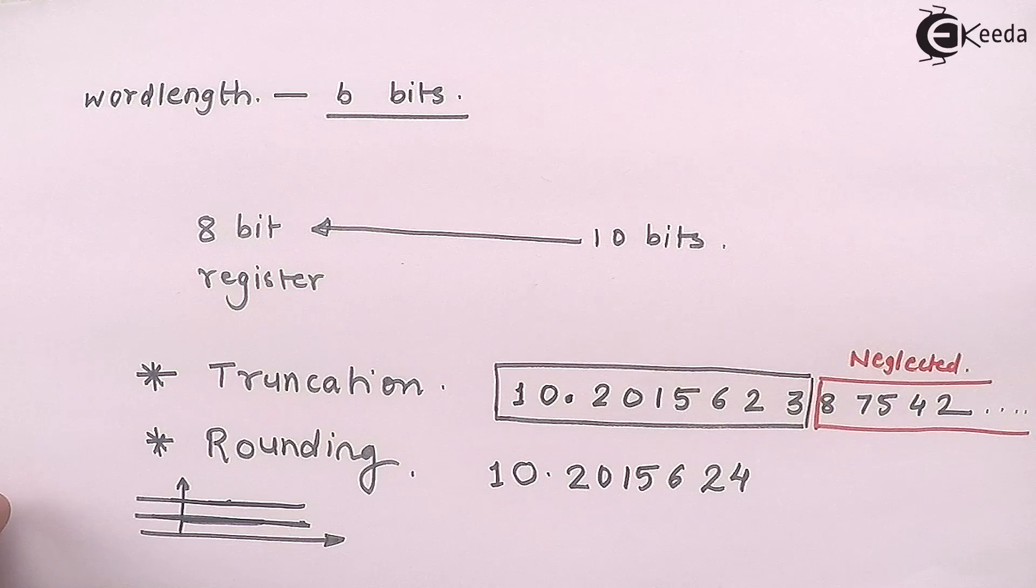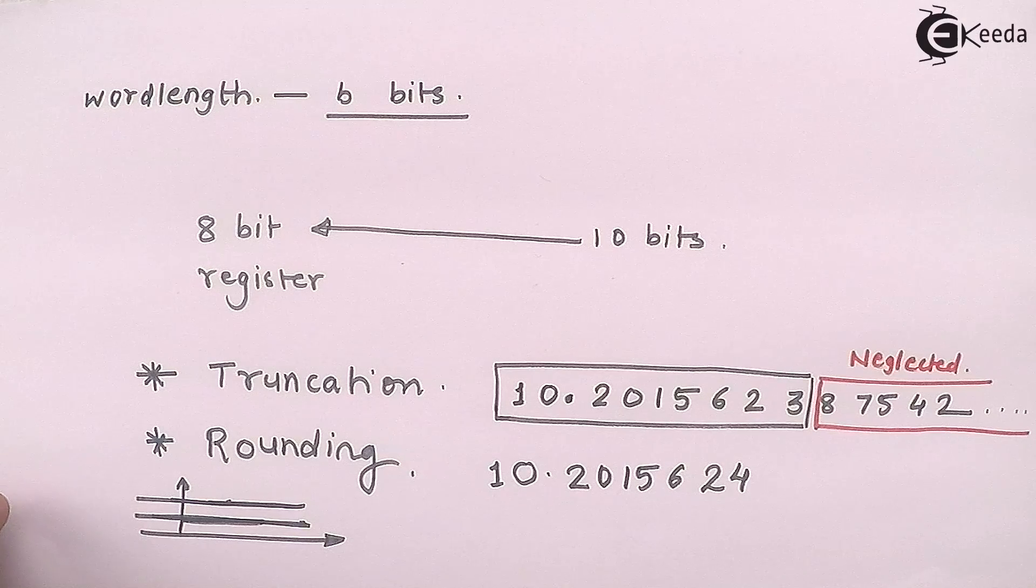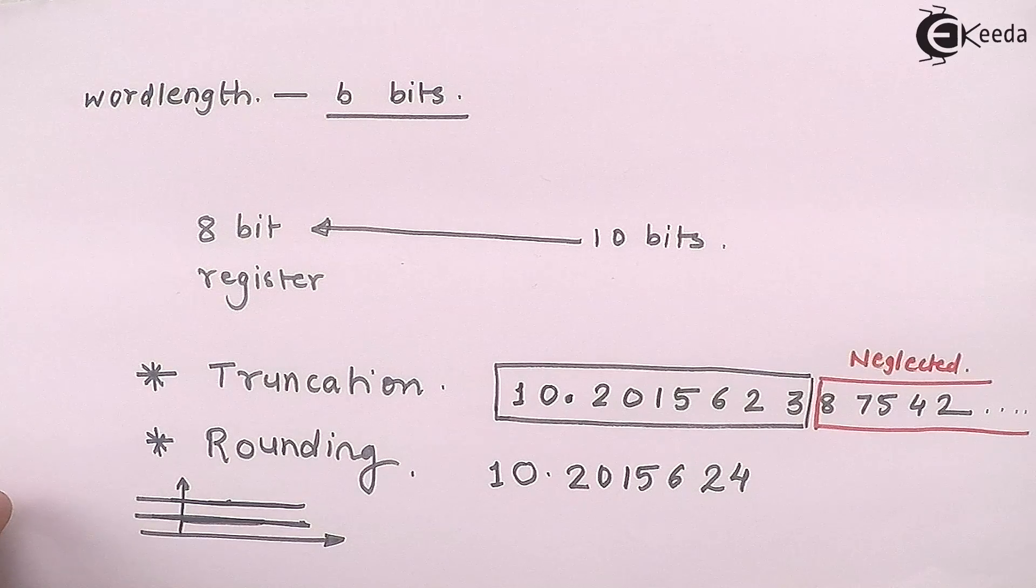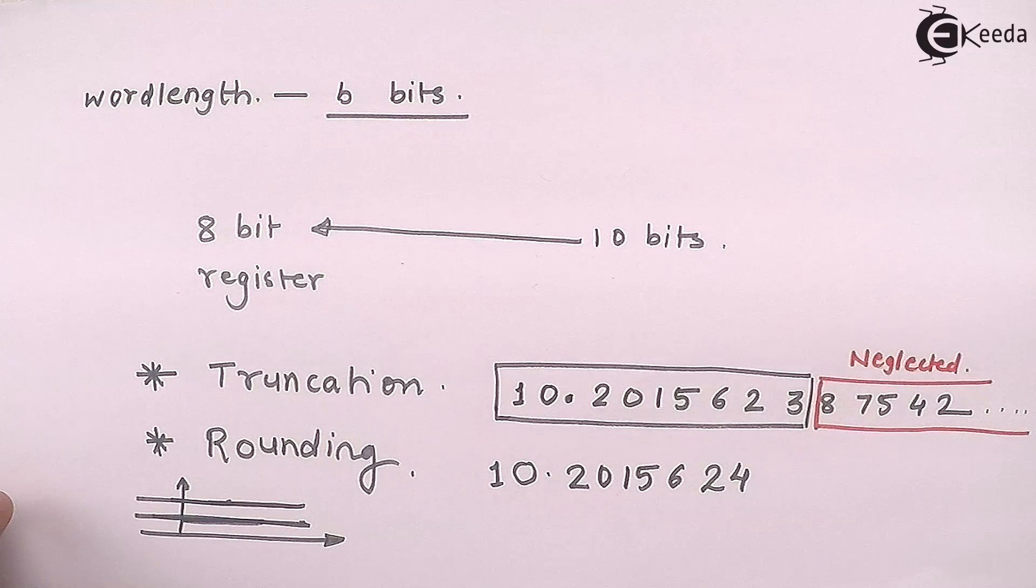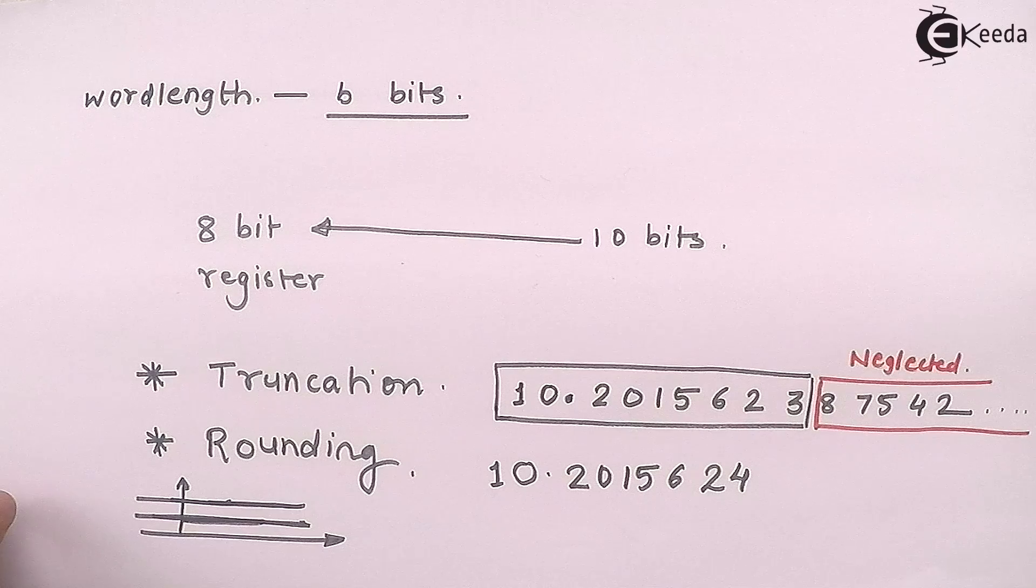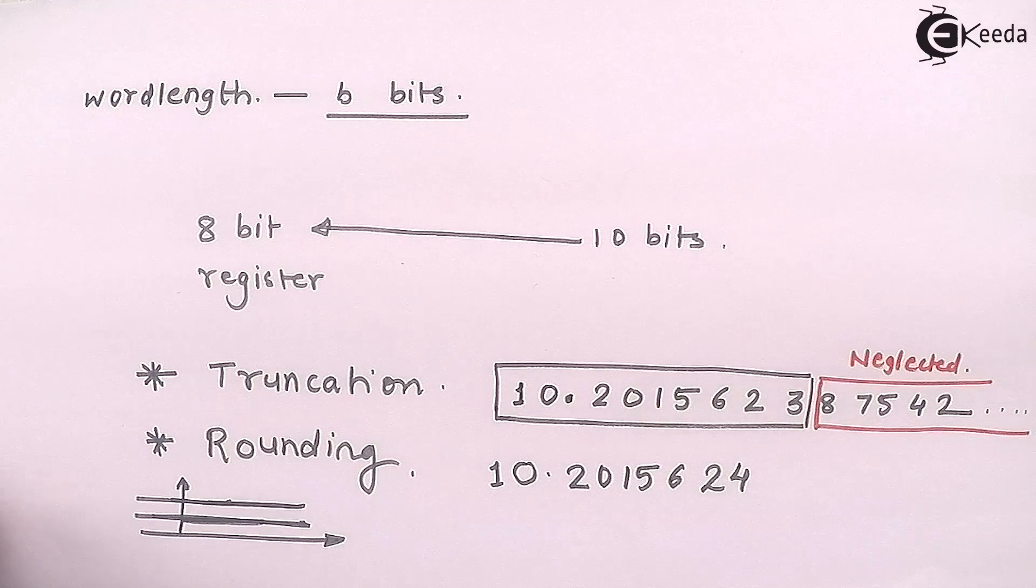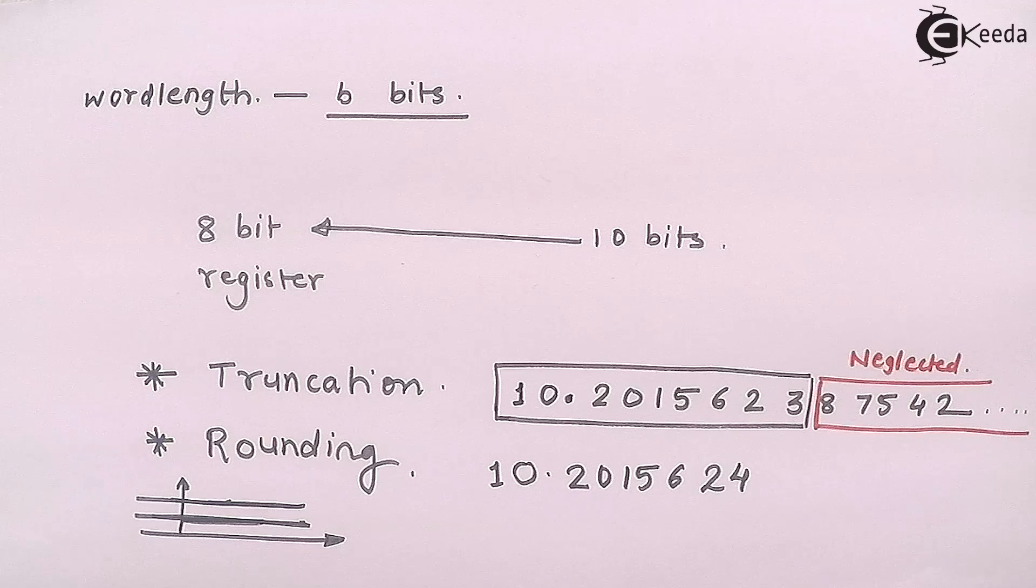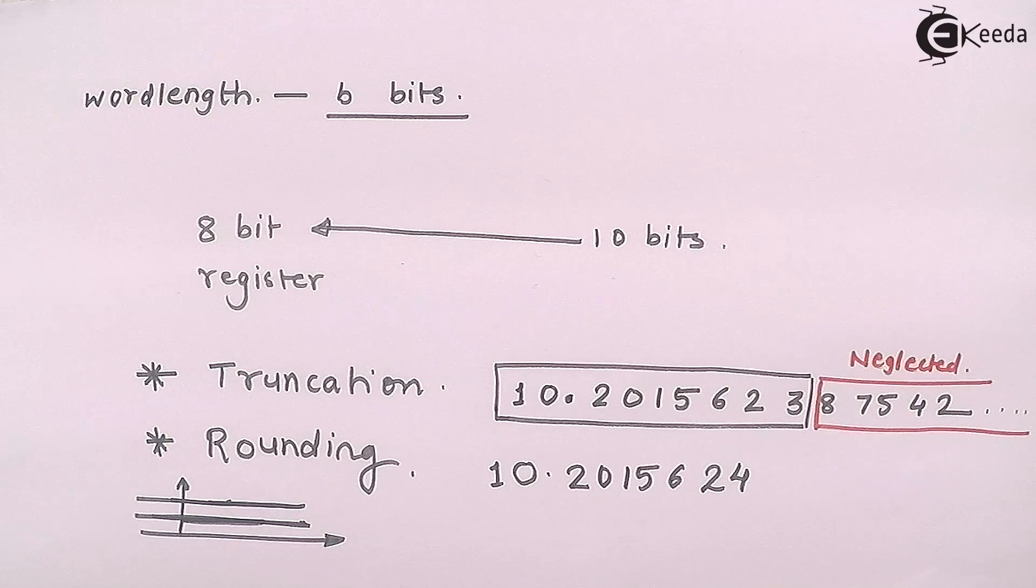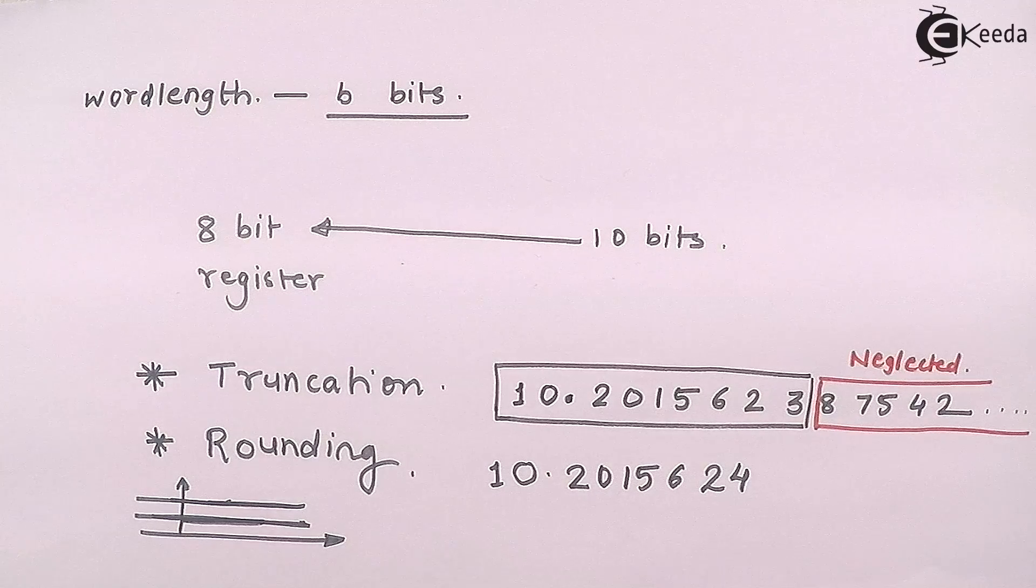But when we are dealing with fractions, it might happen that I will write 3 by 4. That has to be represented using a fixed register number, but a ratio of two numbers is an irrational number, it will go forever. It might happen there would be a recurrence of number or it might happen that the number will terminate after many digits.